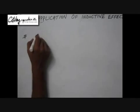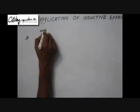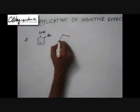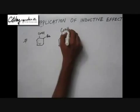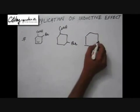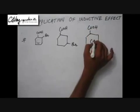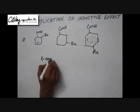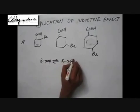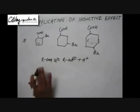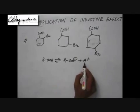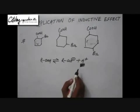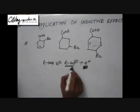Now let's talk about acidic strength. Suppose we are provided three acids whose basic structure is the same except for the position of bromine. Acids lose H+ ions — for example, a carboxylic acid forms a carboxylate ion and H+. The more this reaction shifts in the forward direction, the more H+ is formed for the same amount of acid, and the acid is said to be stronger. The extent of this forward reaction depends upon the stability of the intermediates formed.